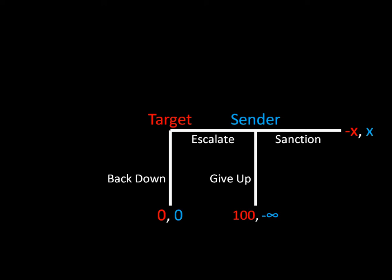We have the back down payoffs set to zeros for both parties. We have the sender, if he gives up, receiving negative infinity — so that's very bad for him — and the target receiving positive 100, so that's very good for the target if the sender backs down after the target escalates. And we have a variable at the end where if the target escalates and the sender sanctions, the target gets negative x and the sender gets x.